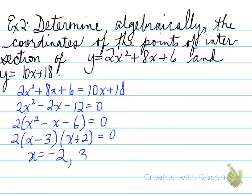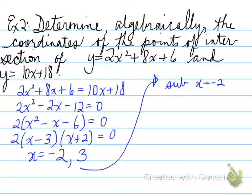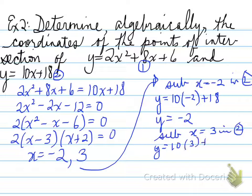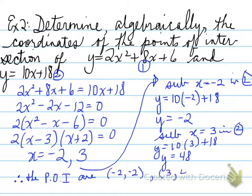Next, find the x values: x equals negative 2 and x equals 3. These are the x coordinates of the points of intersection. But we still need the y coordinates. Substituting x equals negative 2 into equation 2 gives y equals negative 2. Substituting x equals 3 gives y equals 48. So the points of intersection are (negative 2, negative 2) and (3, 48).